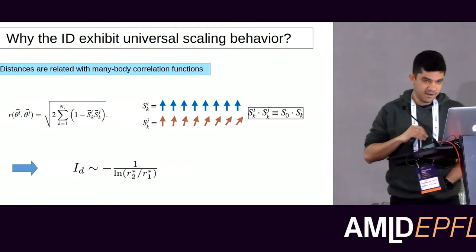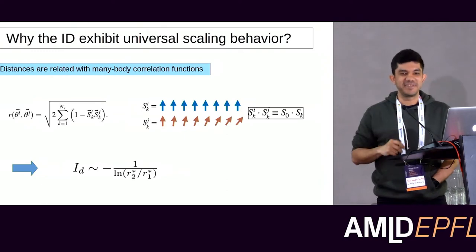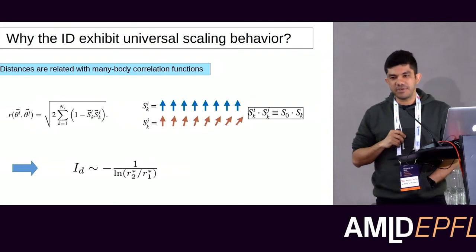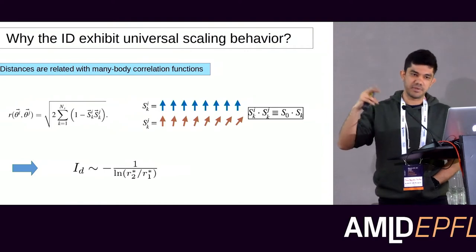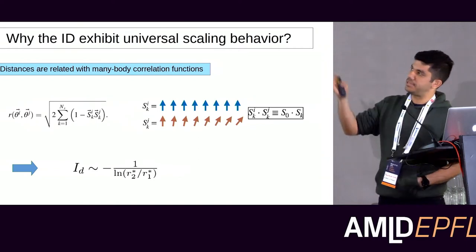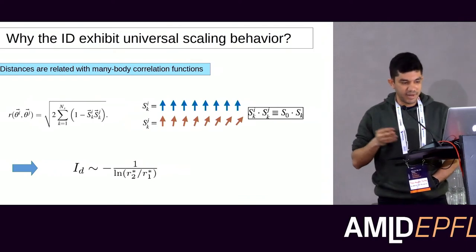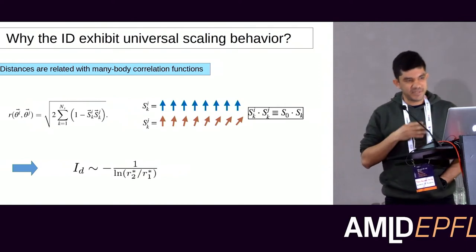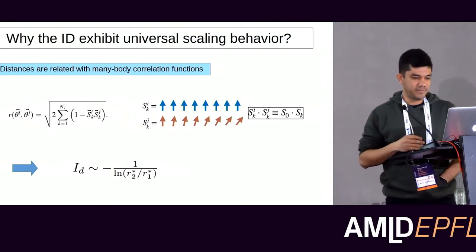Question: How would this generalize to sign-problematic systems? Answer: We are investigating this now. When you have a sign problem, you sample with the modulus of the probability distribution and compute these quantities — so the question is whether you can still learn something about the transition. This is something we are currently looking at, and I hope to discuss results next time.